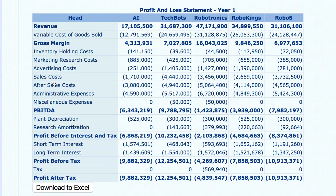Interestingly, the maximum loss is not made by the company with minimum revenue — profits and losses have no real correlation with revenues. It's not that higher revenue means higher profit or vice versa. Also, there is one company that has paid tax, which is Robotronics. This means Robotronics is the only company in this business that has ever made a quarterly profit, since tax is paid only on quarterly profit.